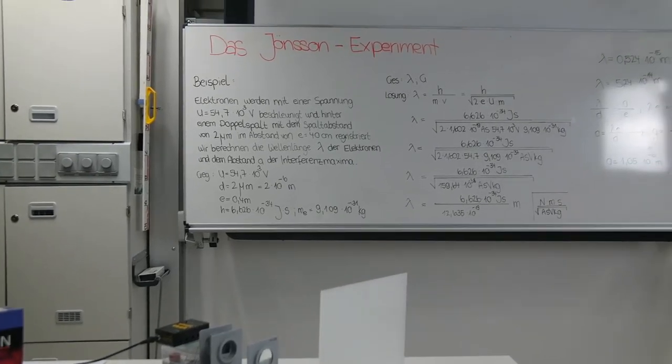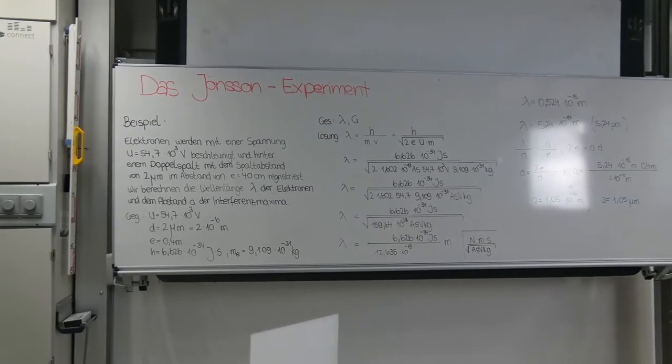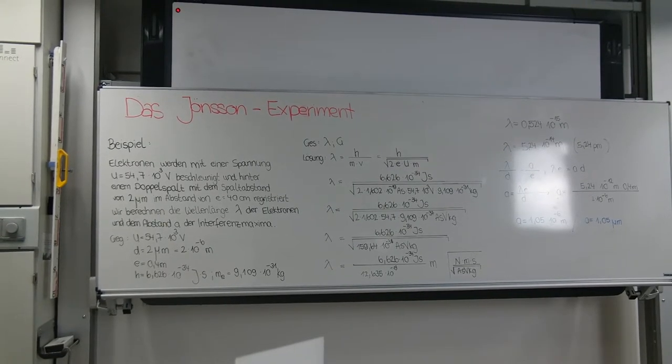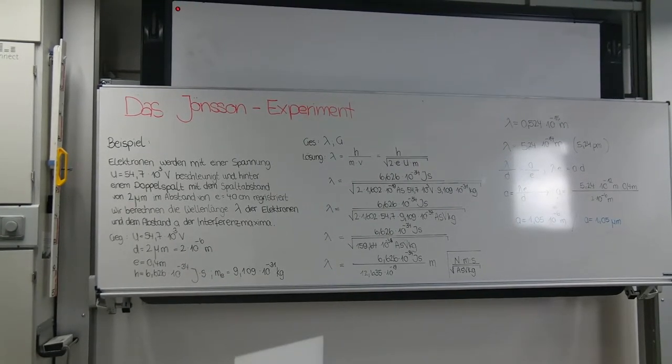And Alina. Quantum objects are neither wave nor particle. They appear to be particle-like objects whose probability of location is given by a wave function, which in turn actually obeys classical wave theory.